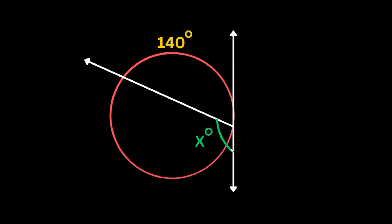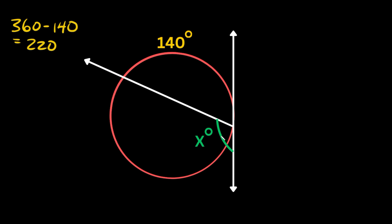In order to find this angle, we first have to find the other arc measure. Remember there are 360 degrees around an entire circle, and we're given that this side is 140. So 360 minus 140 equals 220. This arc measure is 220 degrees. Now remember the angle is always half of the arc measure, so if this is 220, then this angle right here is equal to 110 degrees.